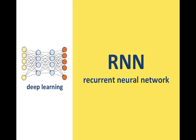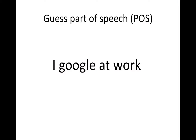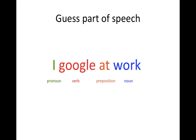Hi, this is a Recurrent Neural Network basic tutorial. When you see a sentence, how do you identify part of speech such as noun or verb? Guess the POS tag for 'I Google at work.' You can easily know that 'Google' here is a verb and 'work' here is a noun.